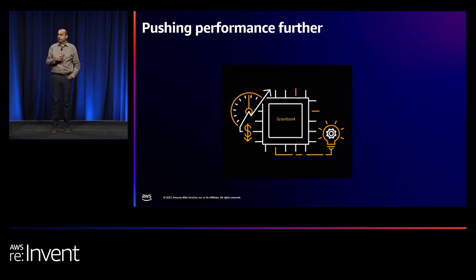In summary, for best price performance across a variety of workloads in EC2, Graviton is a great starting point. The newest Graviton 4-powered R8G instances are now in preview — sign up on the R8G web page. Thank you all for attending this session. Please fill out the survey in the mobile app, and enjoy the rest of re:Invent.